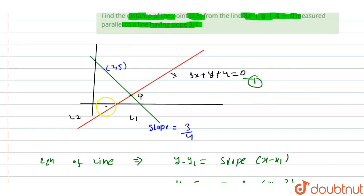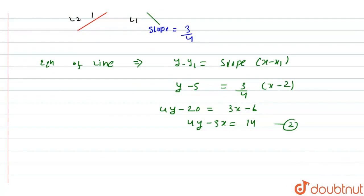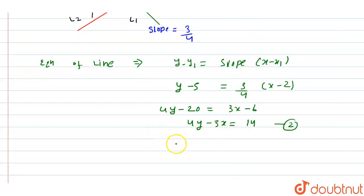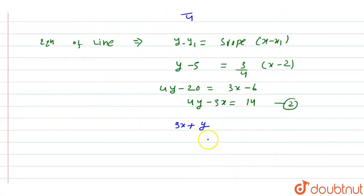At point Q, both lines intersect, so we need to solve for the point of intersection. The other line is 3x + y + 4 = 0.